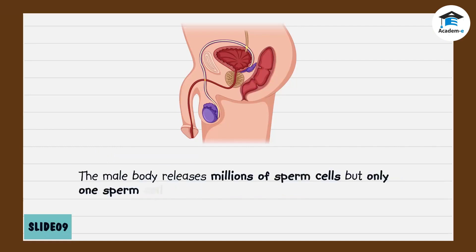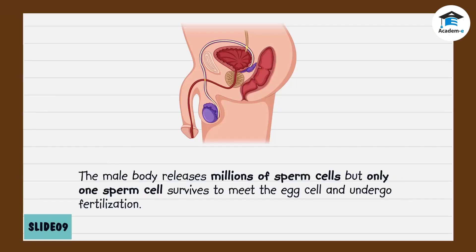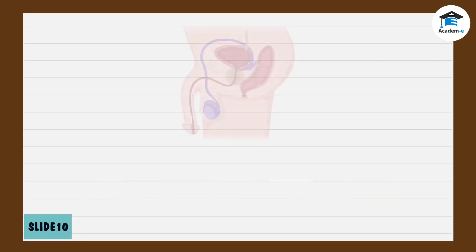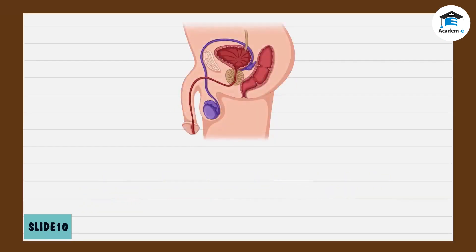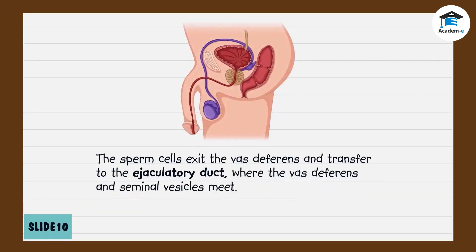The male body releases millions of sperm cells, but only one sperm cell survives to meet the egg cell and undergo fertilization. Once the sperm cells reach the end of the vas deferens, they exit and transfer to the ejaculatory duct.